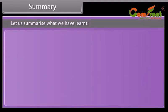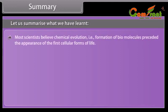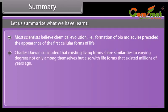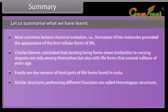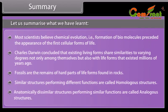Summary. Most scientists believe chemical evolution — that is, formation of biomolecules — preceded the appearance of the first cellular forms of life. Charles Darwin concluded that existing living forms share similarities to varying degrees, not only among themselves but also with life forms that existed millions of years ago. Fossils are the remains of hard parts of life forms found in rocks. Similar structures performing different functions are called homologous structures; anatomically dissimilar structures performing similar functions are called analogous structures.